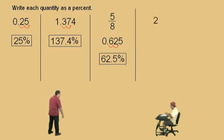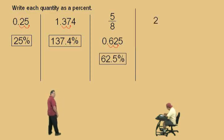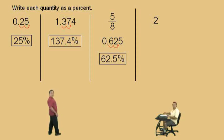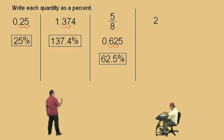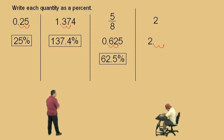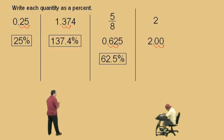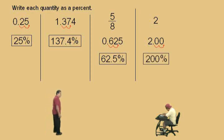Here we go, Charlie. Now we have the number 2. What do we do? Move the decimal two places to the right. So here, we need to put zeros as placeholders, and so we get 200%, and that is our answer.